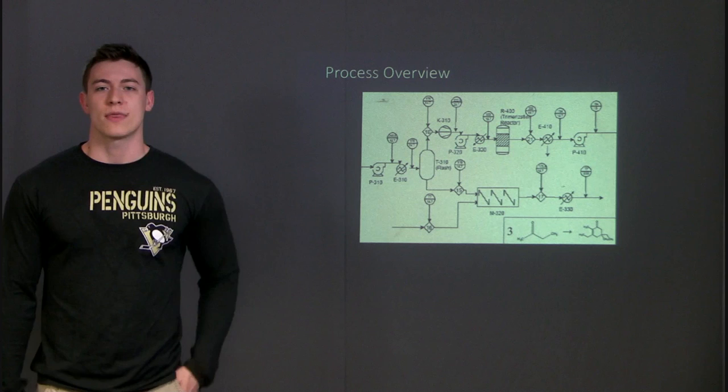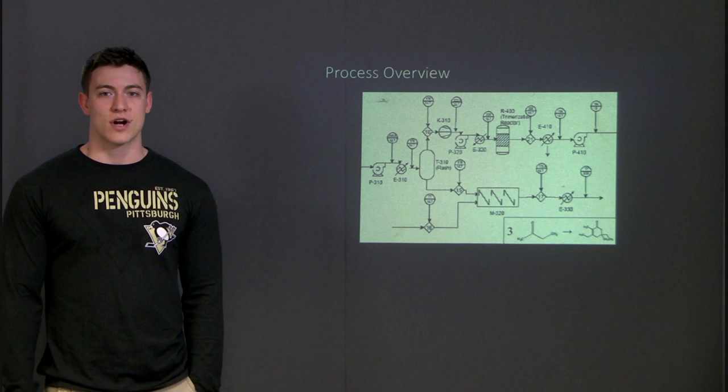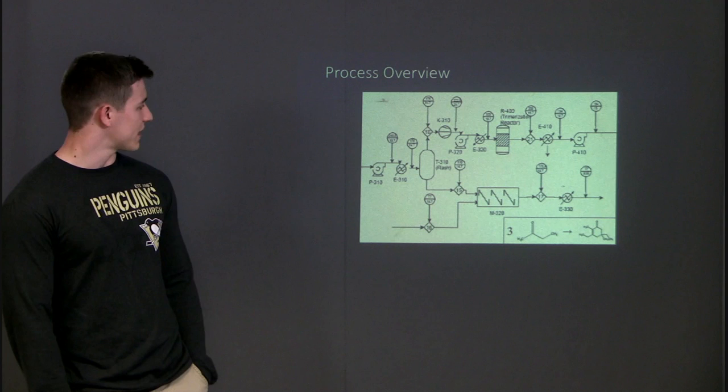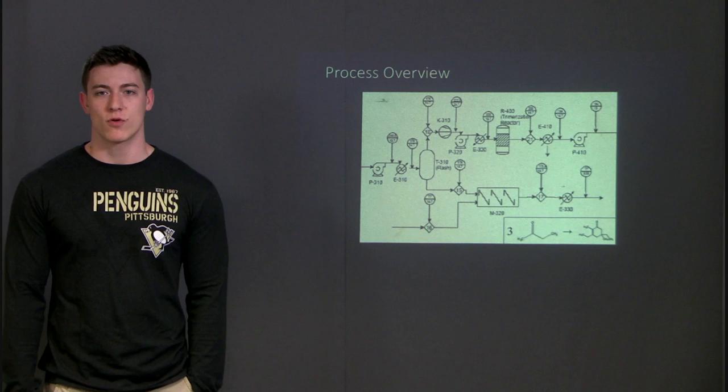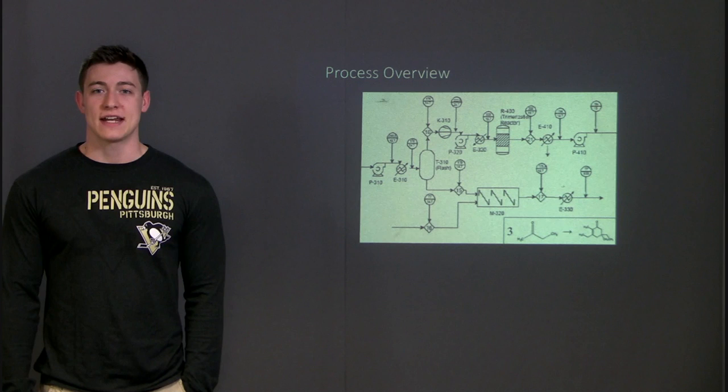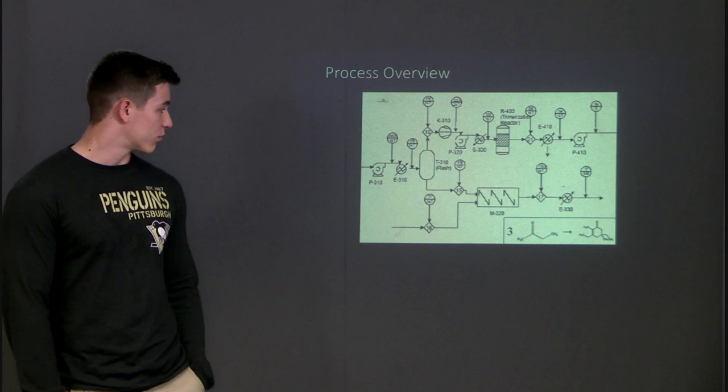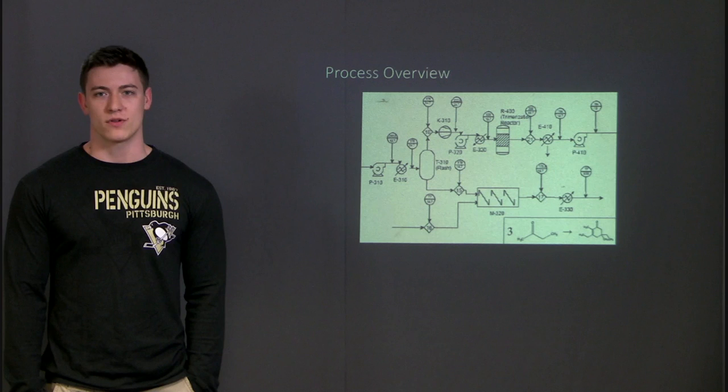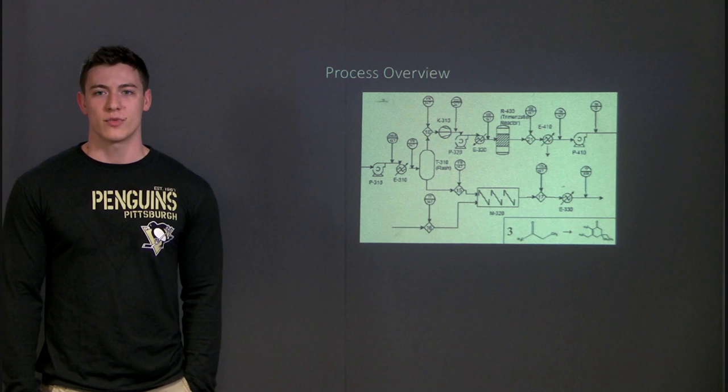The vapor stream coming out of the flash separator is compressed to a liquid and then fed to the trimerization reactor at 338 degrees Fahrenheit and 19.7 psi. The reactor has a residence time of 1.5 hours and performs the reaction shown at the bottom of the slide there. It has a 99% conversion of the methyl ethyl ketone and a 95% selectivity for the desirable product, which is shown in the bottom right there, and that is called 3,5-diethyl-2,5-dimethyl-cyclohex-2-ene-1-one, also known as 3,5-ketone. A heavier oligomer is also produced in the reaction as an unwanted by-product.